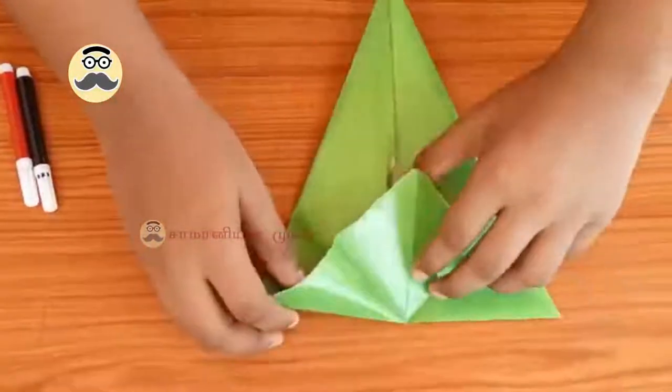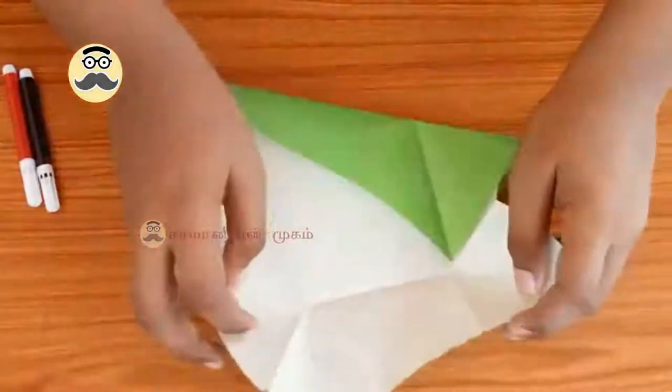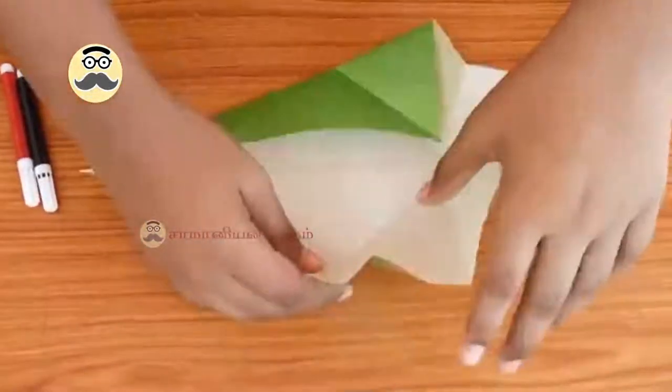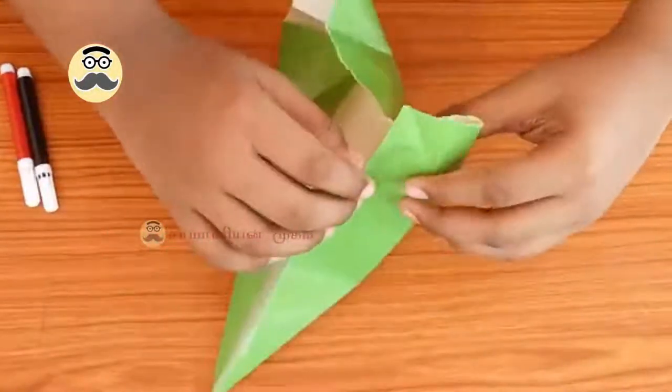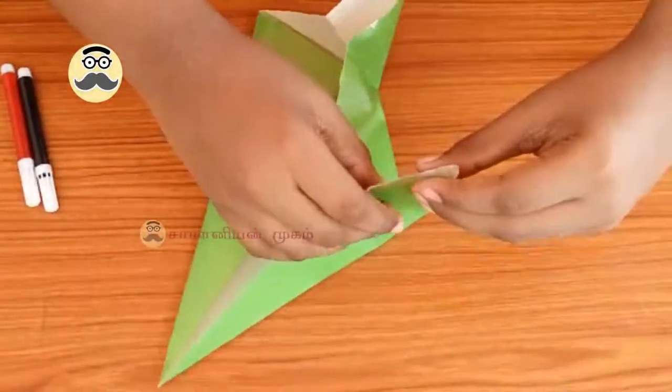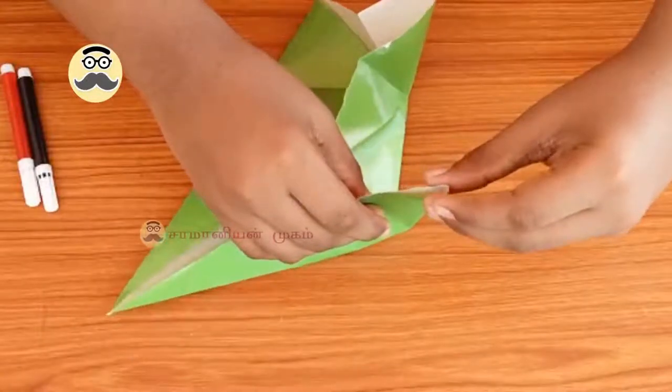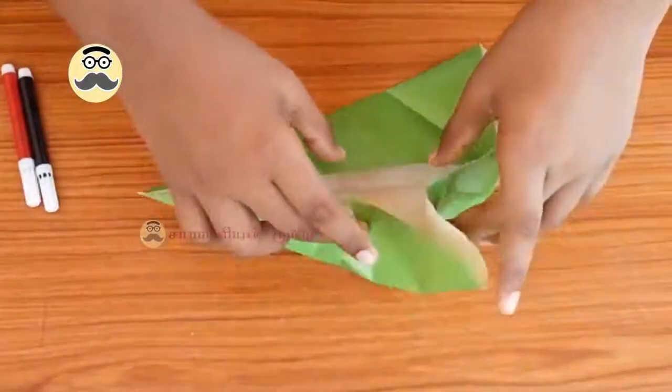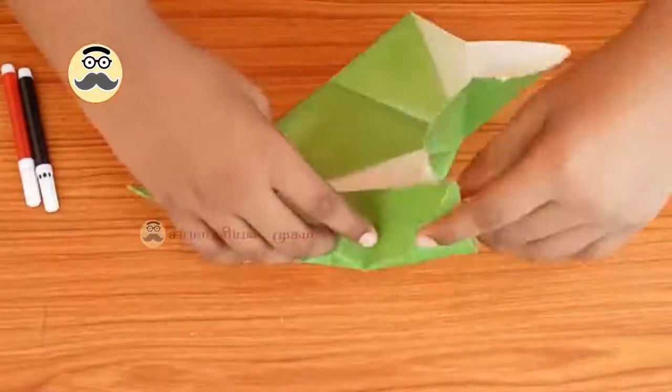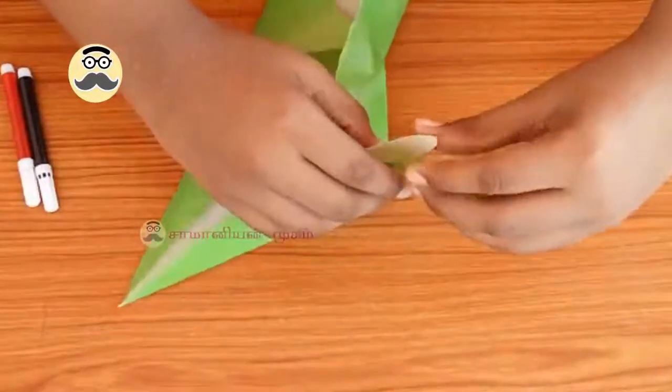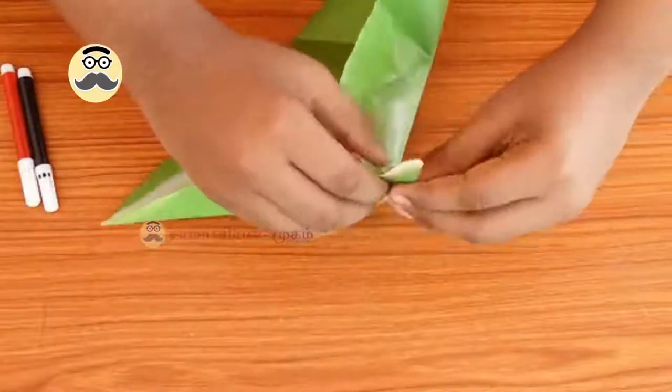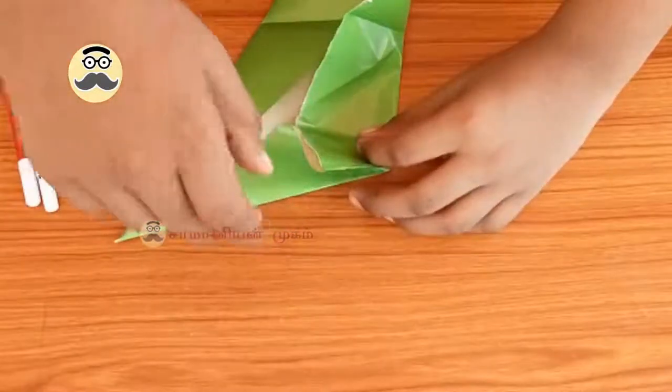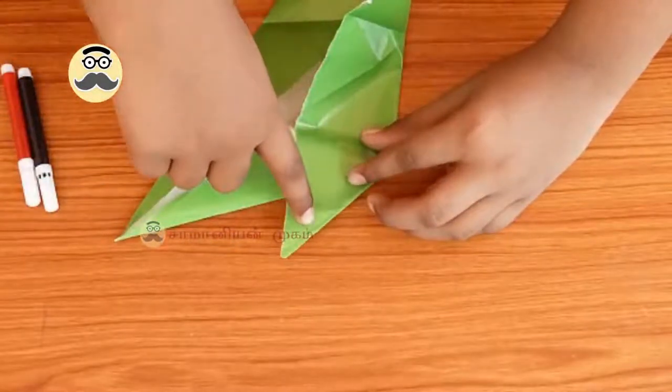Now open one flap, you will get this shape. Then make it as a triangle like this. Then press it down.